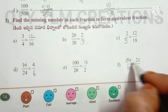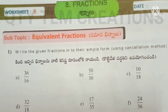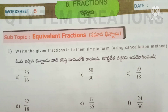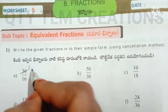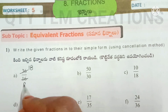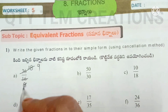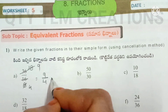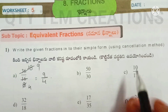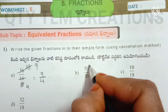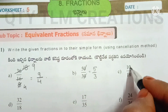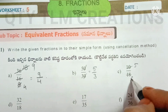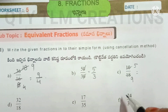Next, worksheet number five, subtopic: equivalent fractions — simplest form. First question: write the given fractions in their simplest form using the cancellation method. For 16/18: divide by 2 to get 8/9. For 50/30: cancel the zeros to get 5/3. For 10/18: 5 and 9 have no common factors other than 1, so the simplest form is 5/9.